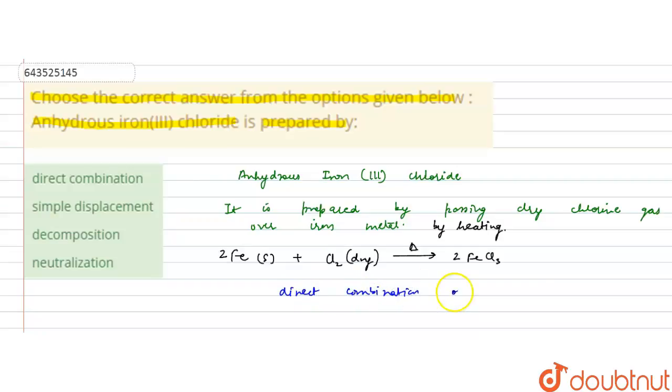Direct combination of the elements - iron(III) chloride is prepared this way. So the correct answer to this question will be option A: direct combination.